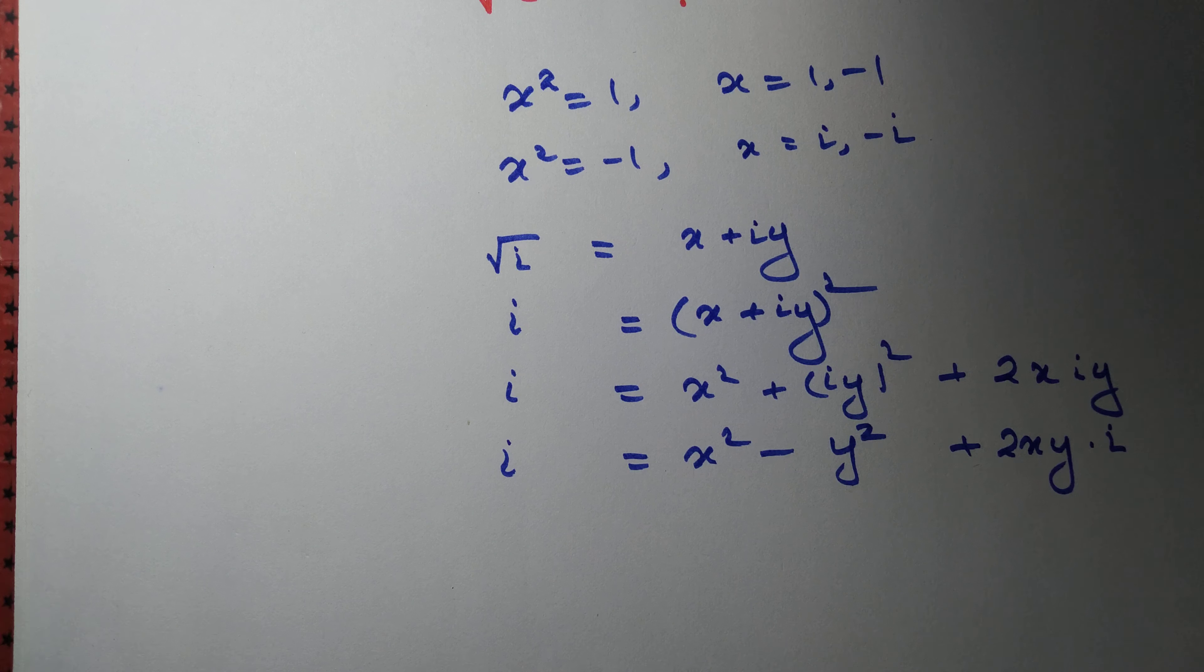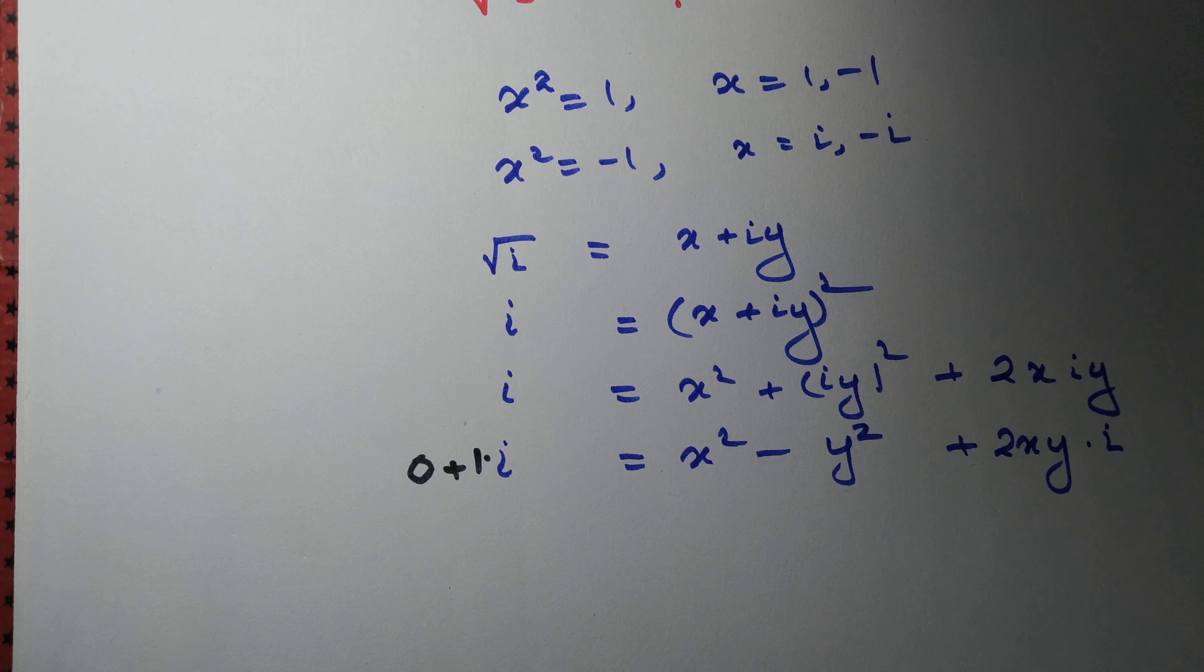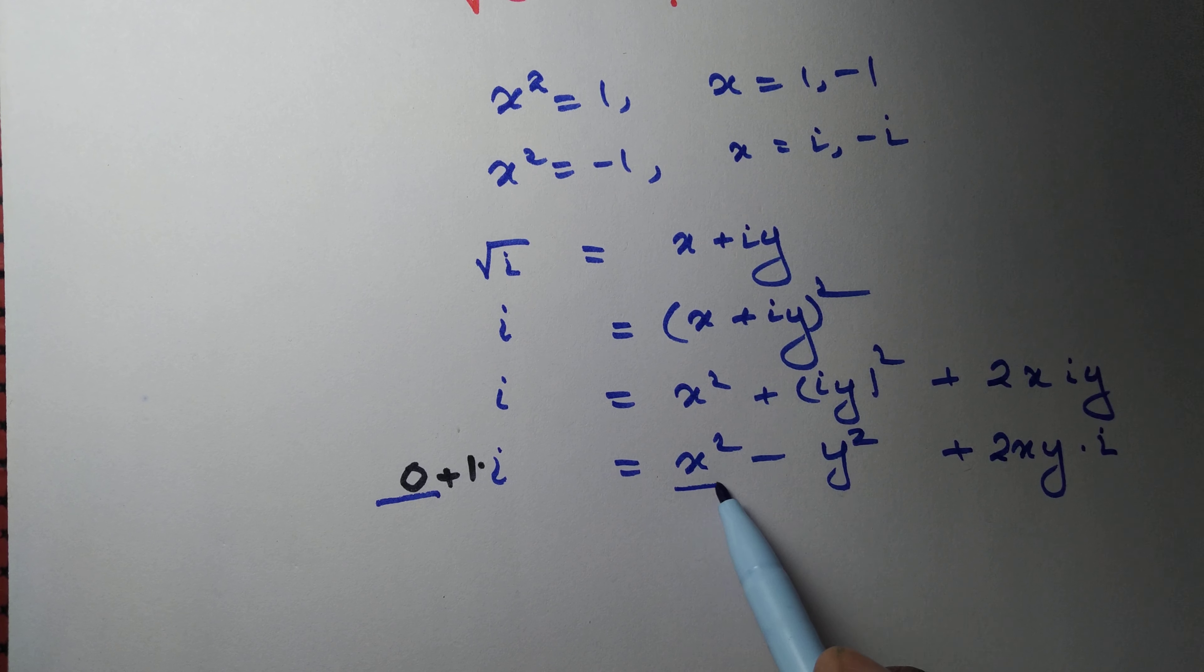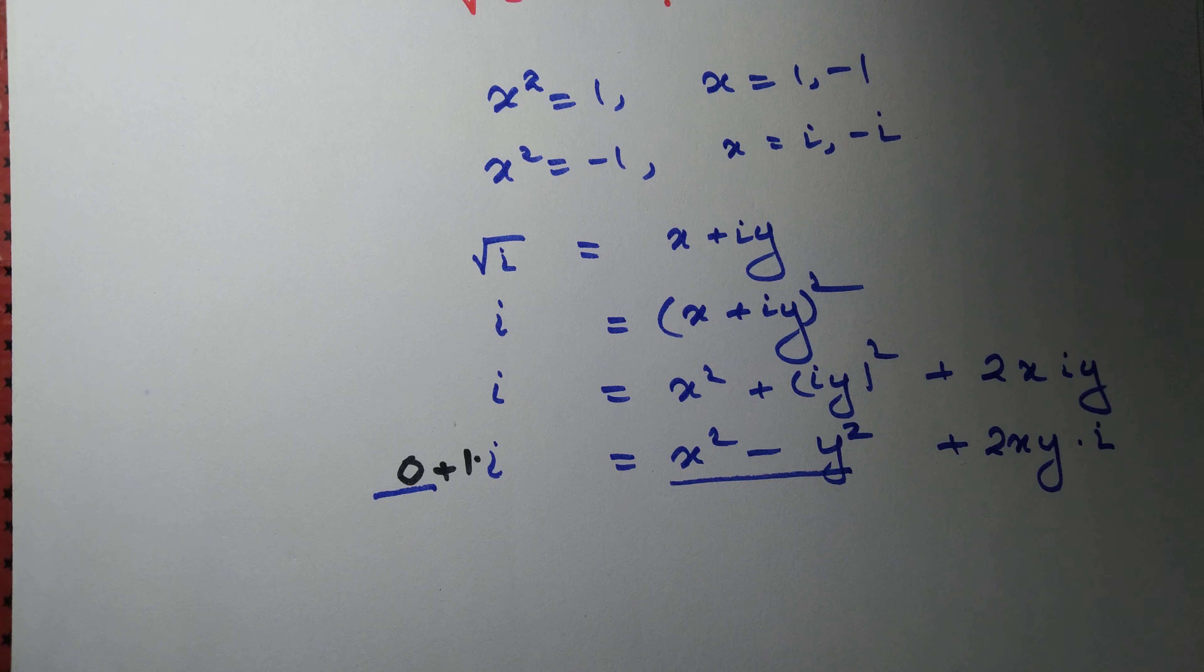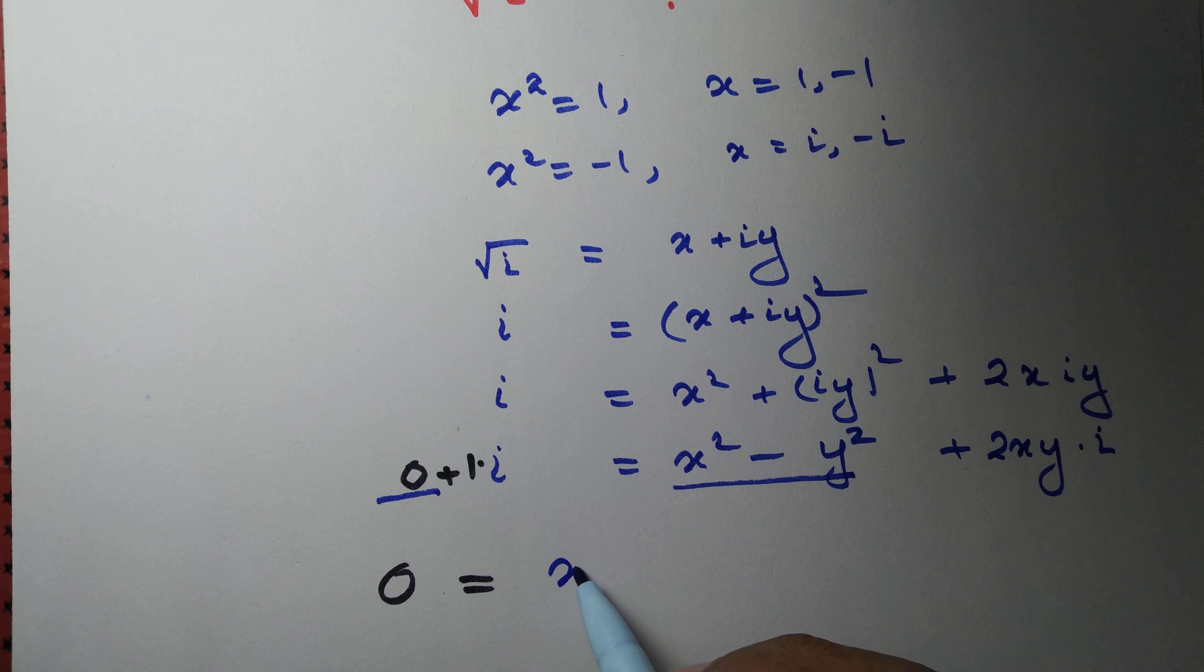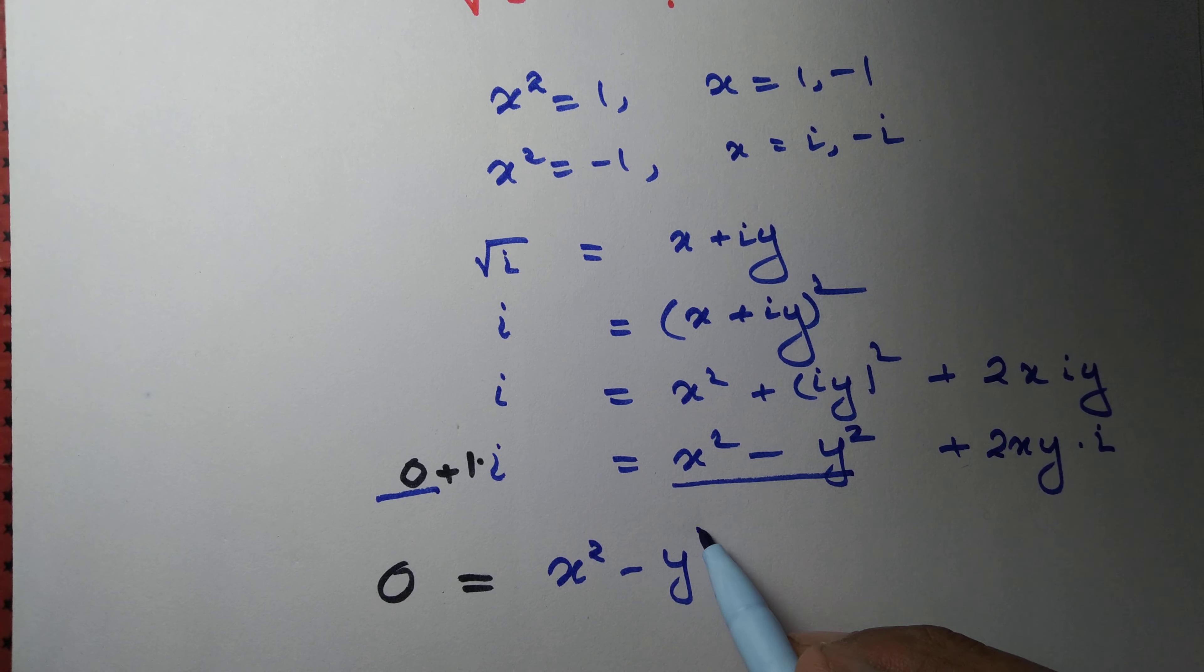Now i can be written as 0 plus 1 into i. If two complex numbers are equal, then their real parts must be equal. That is 0 here, and here x squared minus y squared must be equal. So 0 equals x squared minus y squared.